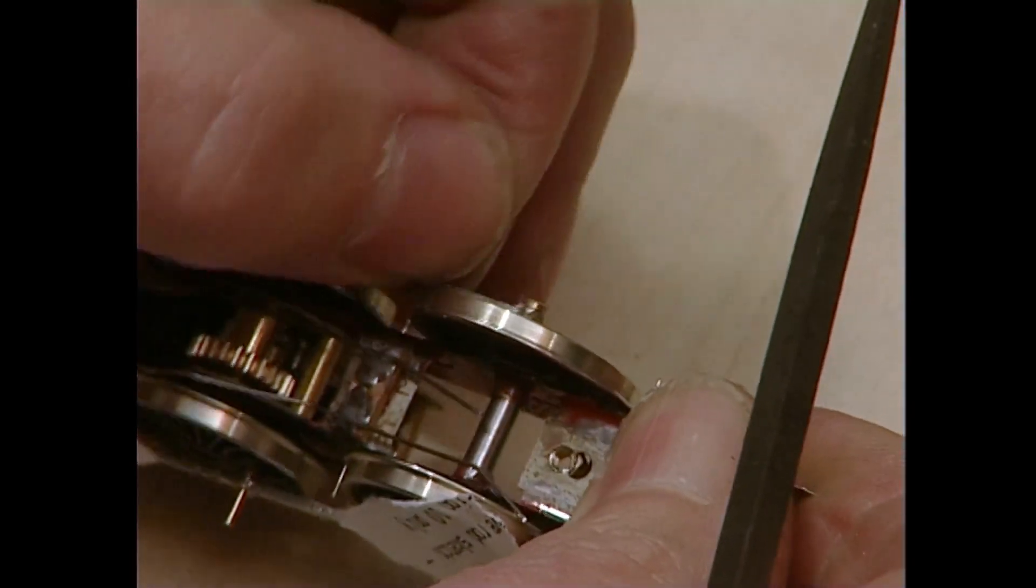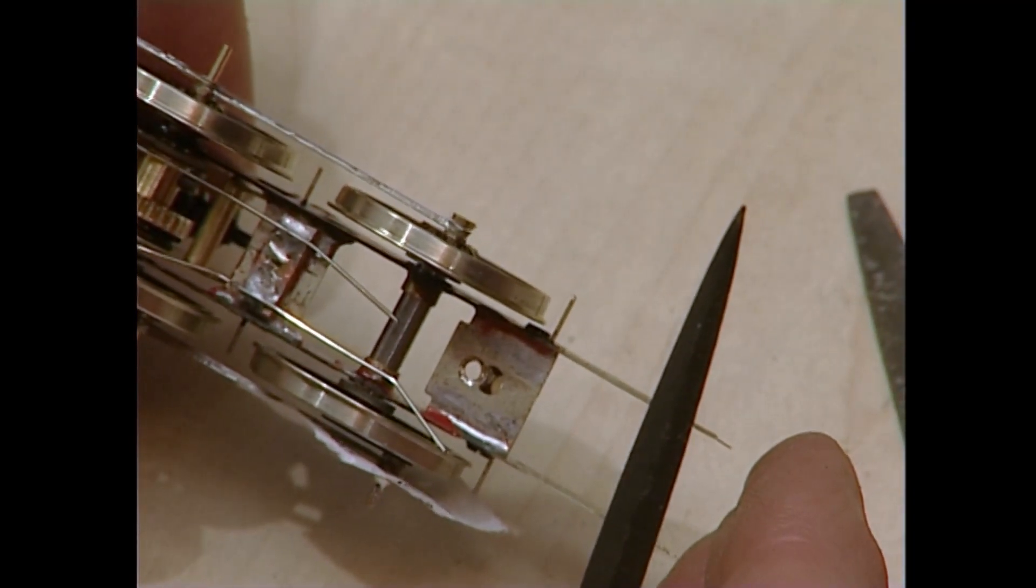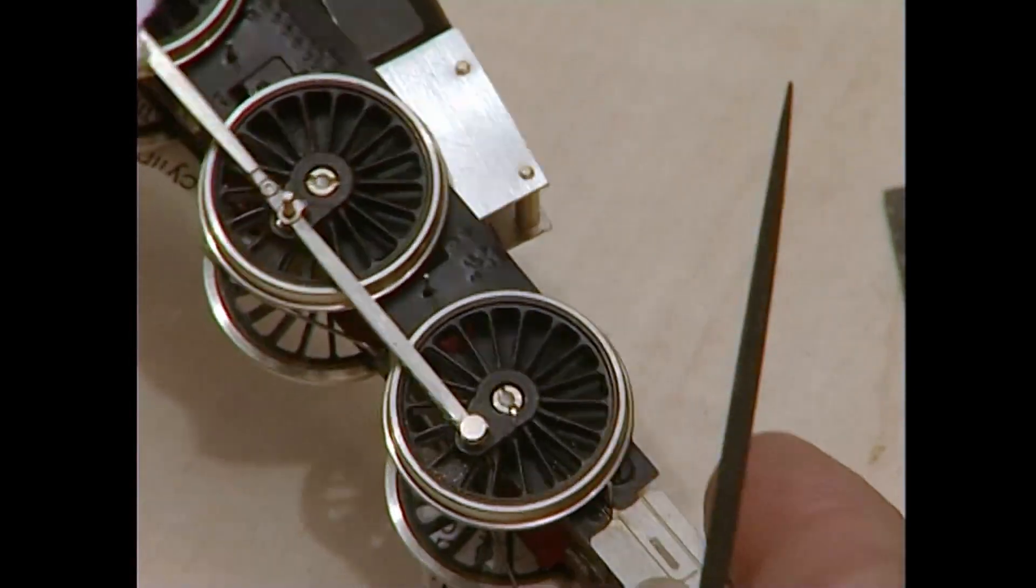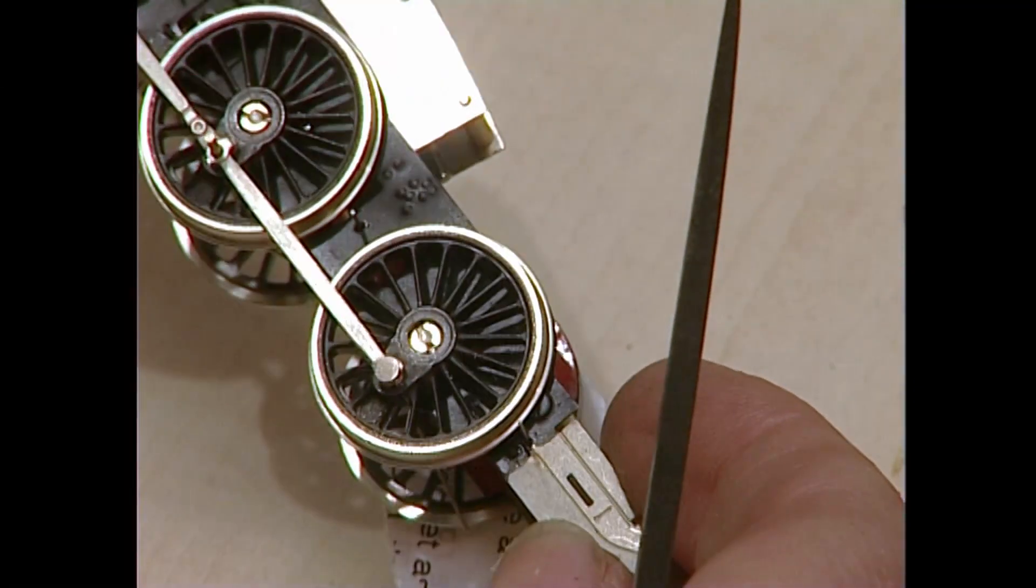Next job is to remove the surplus length of the crankpins. Now, some people use cutters for this. I find that just a little bit extreme. So I prefer to use a piercing saw and files.